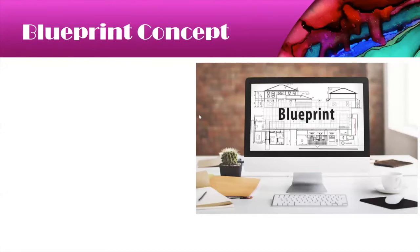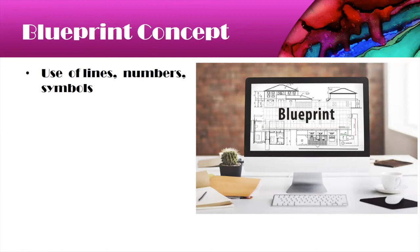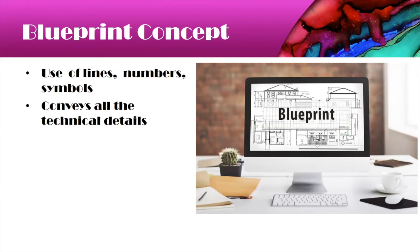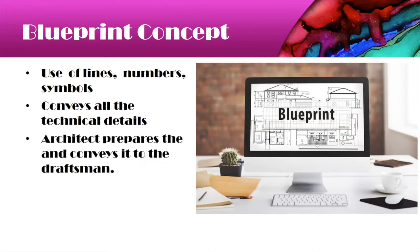Now we come to the blueprint concept. Since we are not going to study it in as much detail as architecture students, to briefly understand: a blueprint uses lines, numbers, symbols, etc. to convey meaning to the readers. Since the symbols are generic in nature, everybody understands them, so it conveys the detail of the blueprint to the person reading it. Usually the architect prepares a blueprint and conveys all the details to the draftsman or the person sanctioning or undertaking the construction of the building.